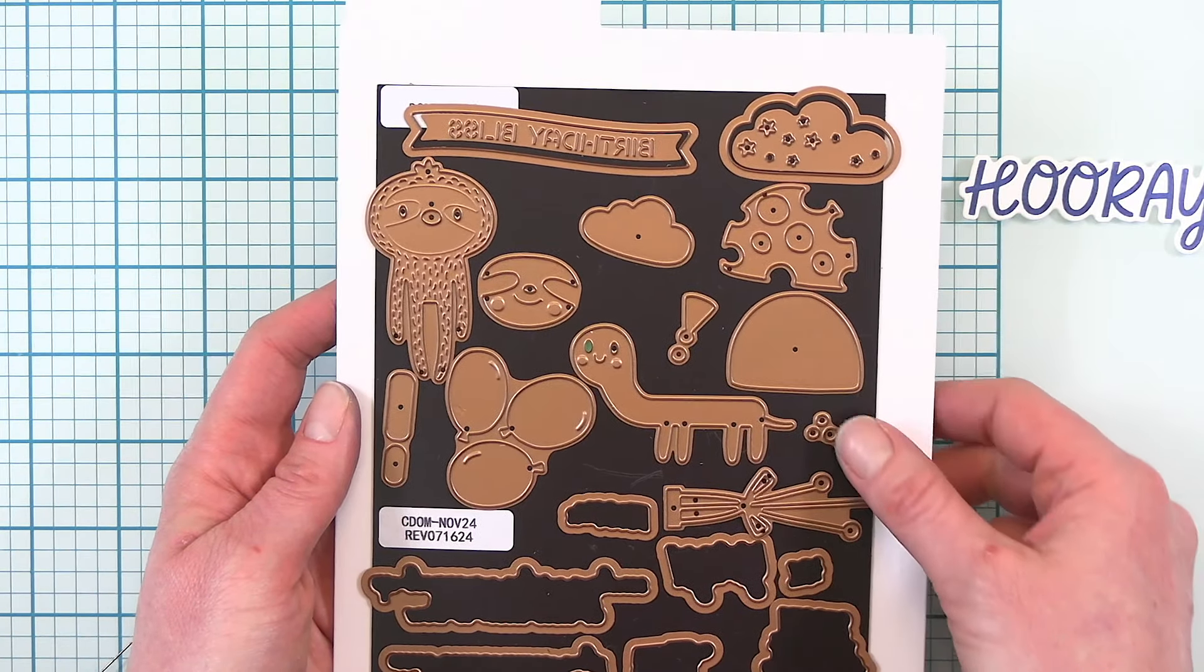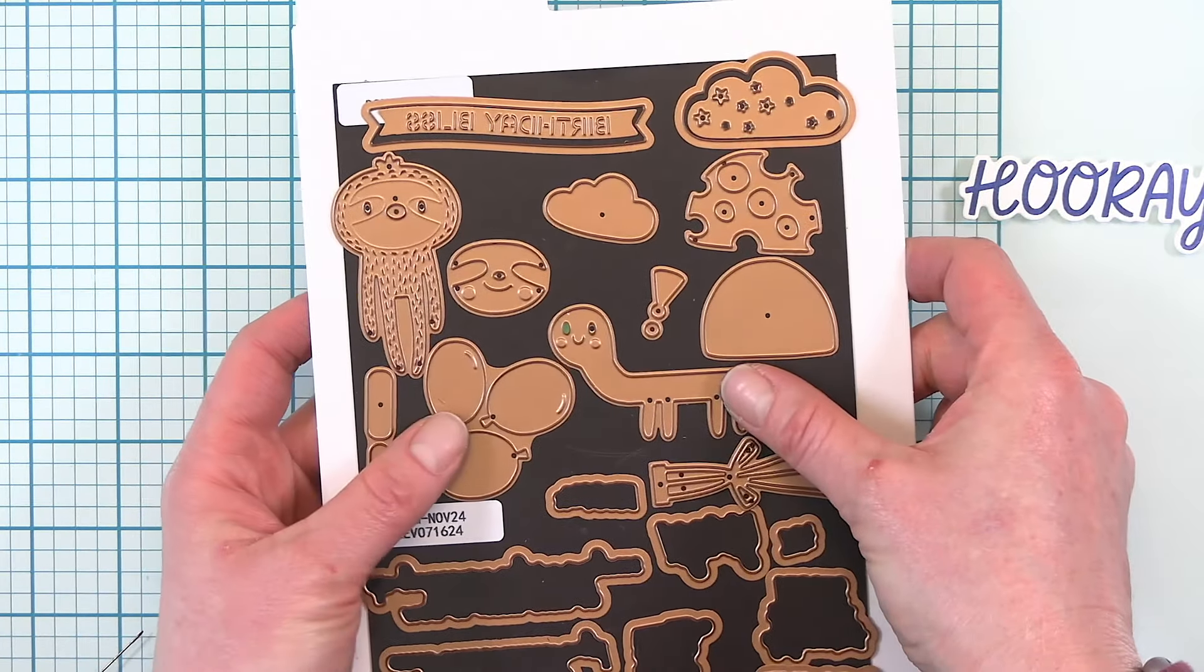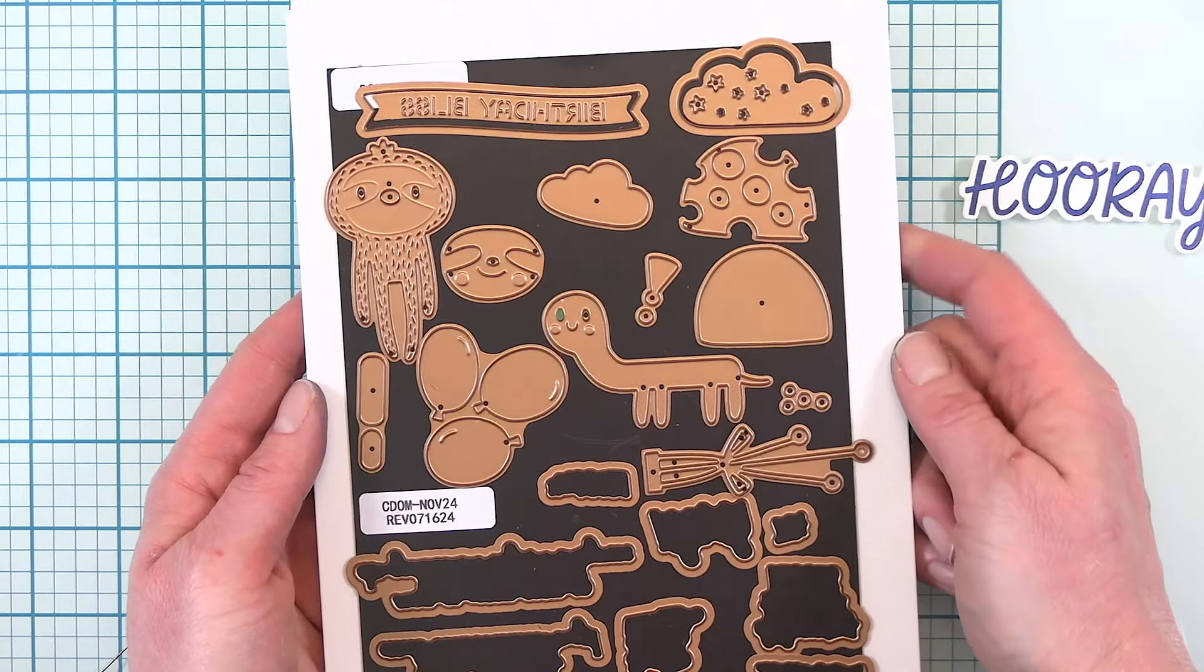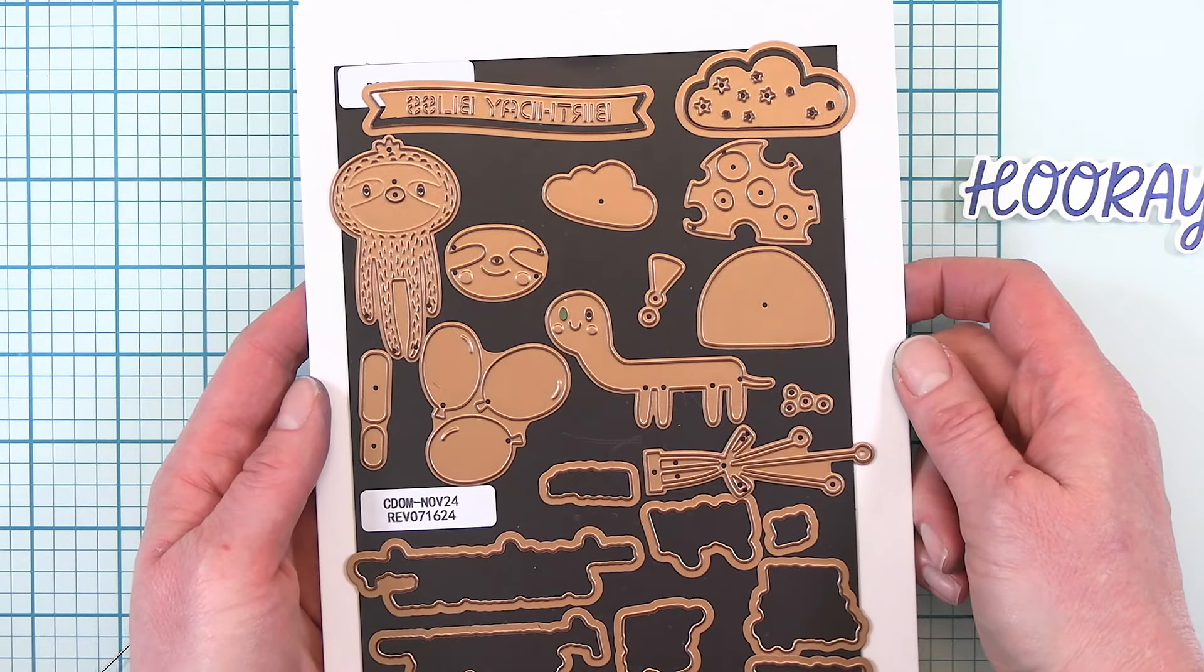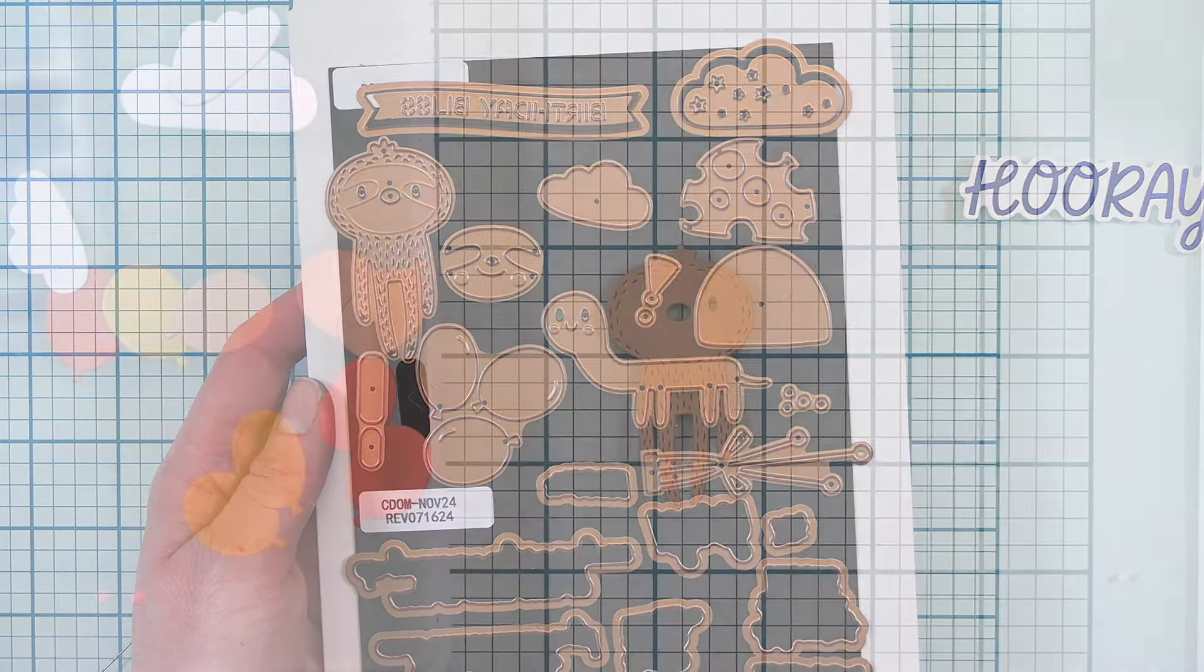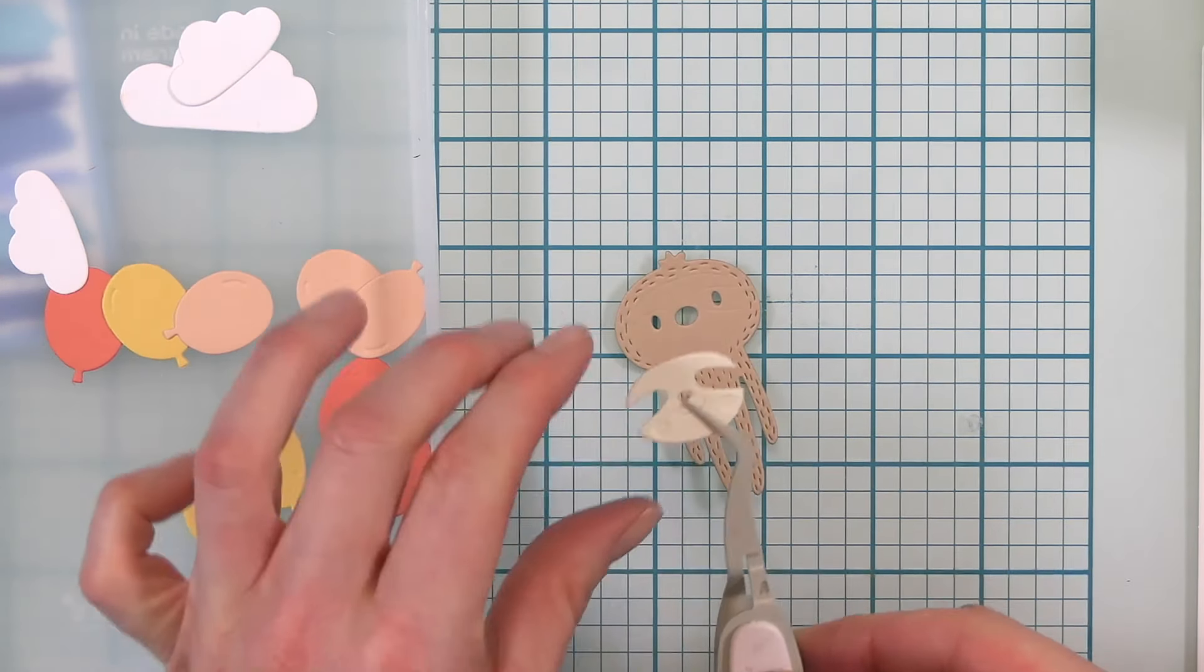Okay next I'm grabbing the small die of the month. Now this is such an awesome die. Not only do you get balloons but you get cute critters and a banner. I just love it.